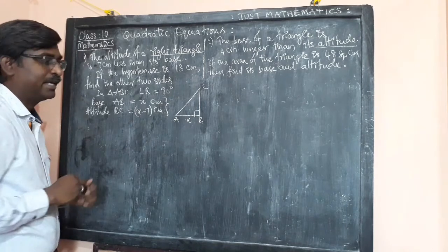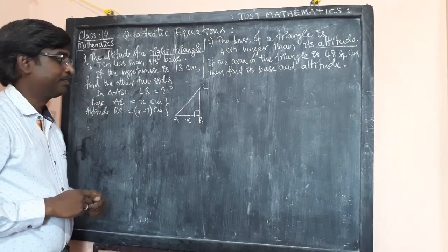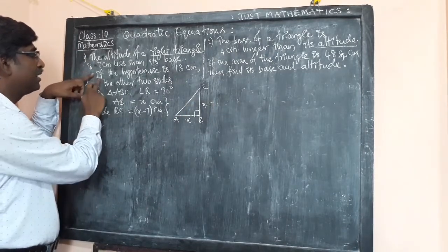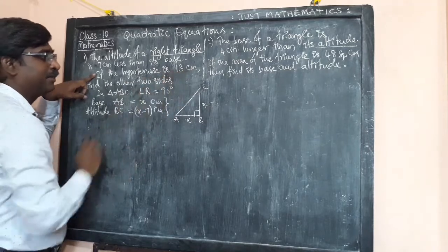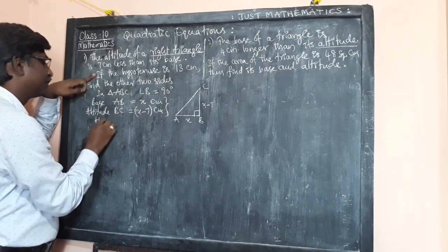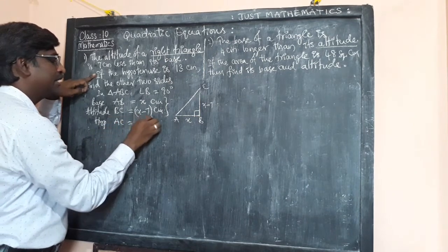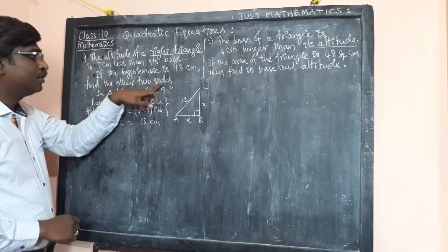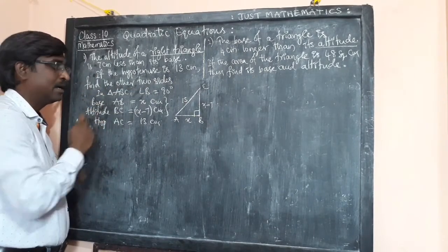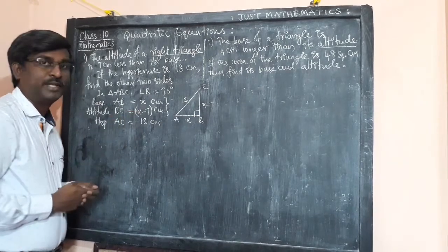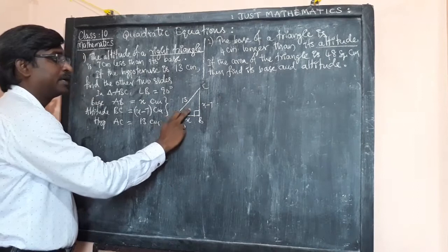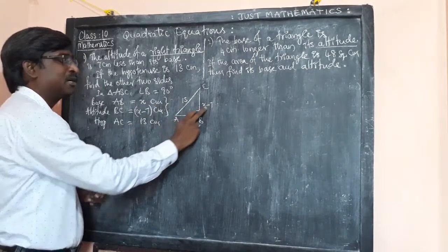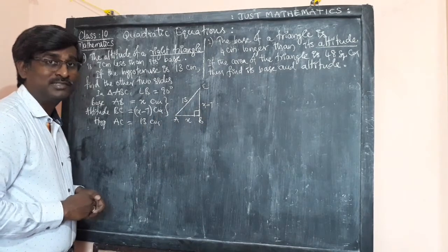So this is the way to introduce the variables: base AB = x cm and altitude BC = x minus 7 cm. The hypotenuse AC is given as 13 centimeters. We need to find the other two sides, that is the base and the altitude. We use the Pythagorean theorem, since in a right angle triangle the square of the hypotenuse equals the sum of squares of the other two sides.